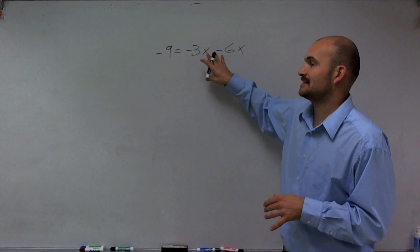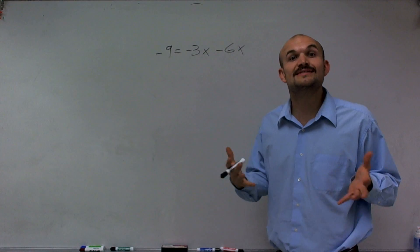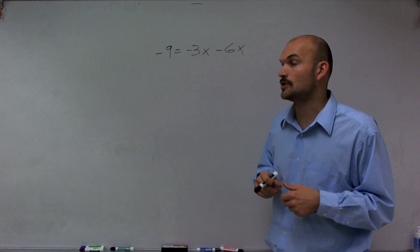What I notice right now is I have two variables, and I can't solve for a variable when I have two of them. So I need some way to simplify this equation before I can actually solve for x.